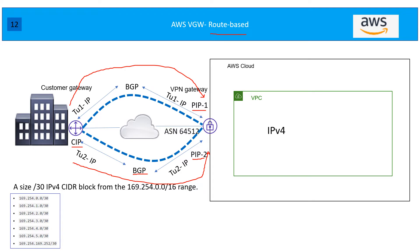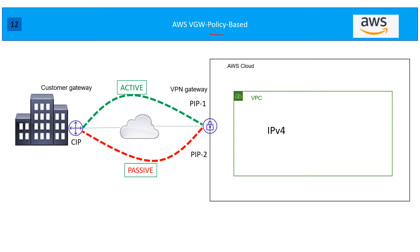For route-based VPN you will have two tunnels: one tunnel terminates on PIP1 and another on PIP2. You will be running BGP here. The tunnel interface IP addresses are private — the default range is a /30 IPv4 CIDR block from the 169.254.0.0/16 range, which is the reserved link-local range. When generating the configuration for the customer end, you can leave it to default and AWS will assign these /30 ranges.